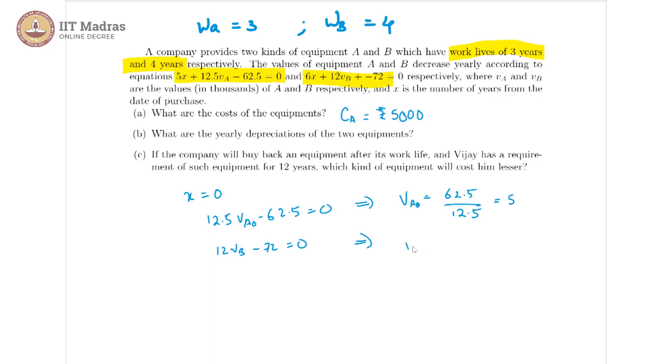This would imply VB, again I am calling this VB naught to indicate the initial cost, that would be 72 divided by 12 which is equal to 6. So CB, the cost of B, is rupees 6,000.